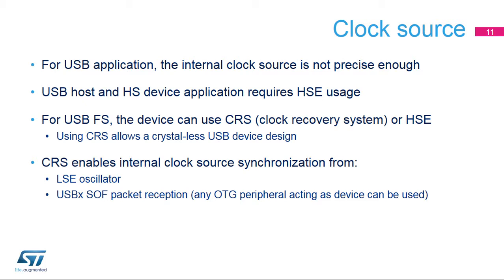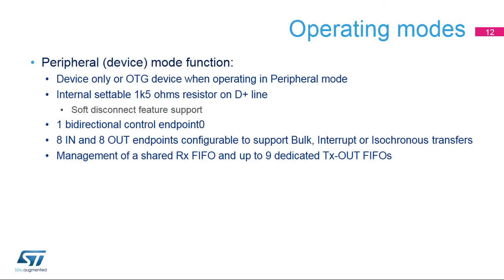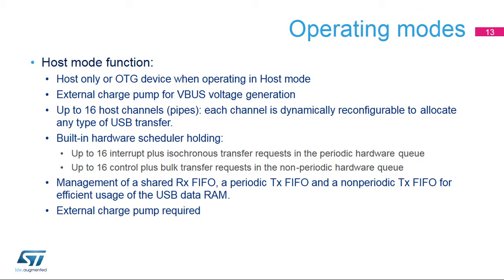Note that this clock recovery system is only relevant for the case of a full-speed device. At any given time, one of the two operating modes, host or device mode, is functional. Peripheral mode is used for a regular device or an OTG device when operating in device mode. A 1.5-kilo-ohm pull resistor on the D-plus line can be used to show the presence of the device on the bus. One bi-directional control endpoint zero is available, and another 8-in and 8-out endpoints can be set on the fly. A dedicated 4-kilobyte RAM can be divided into one shared RX-FIFO and up to 9 TX-FIFOs, one for each endpoint.